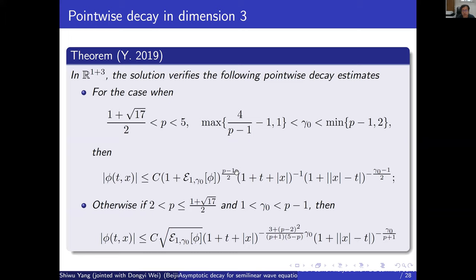We also have pointwise decay estimates in dimension d equals three. Our lower bound for p is almost 2.5, improving previous results where the sharp decay estimates only held when p is bigger than three. We can prove the solution decays at the rate consistent with the three-dimensional wave decay of (1+t)^{-1}, which we call the sharp decay estimate. For p bigger than two we also have other weaker decay estimates.